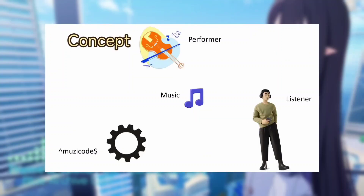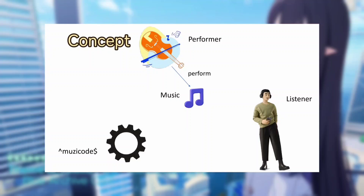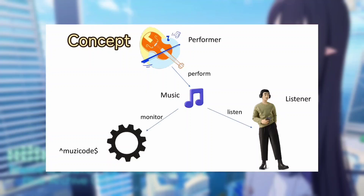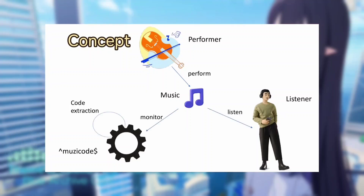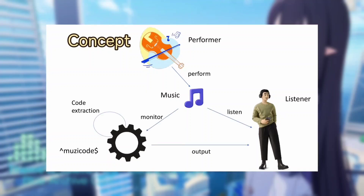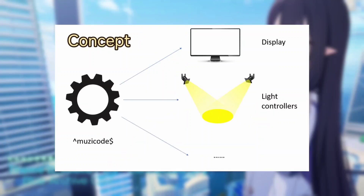Music Code is a system like this. A performer plays music, Music Code monitors the inputs, extracts the codes, and generates outputs. The output can take many forms, such as display, light controllers, and so on.